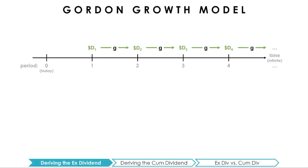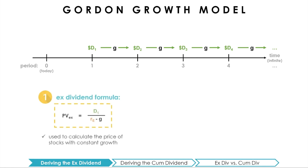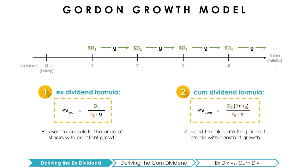Recall that the Gordon growth model allows us to calculate the price of a stock that raises the size of each consecutive dividend at a constant rate. There are two versions: the ex-dividend formula and the cum-dividend formula. In both formulas, G is the constant growth rate of the dividends, and RE is the cost of the company's equity — the appropriate discount rate reflecting the riskiness of the firm's equity relative to the rest of the stock market.